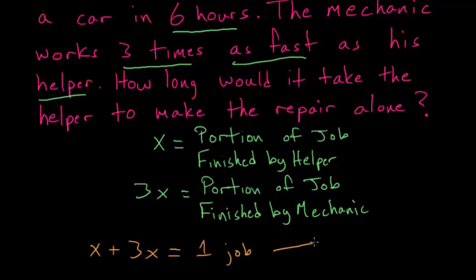From here we solve for x. x plus 3x is 4x, and that equals one job. Dividing each side by 4, we know that x equals one-fourth of the total job.